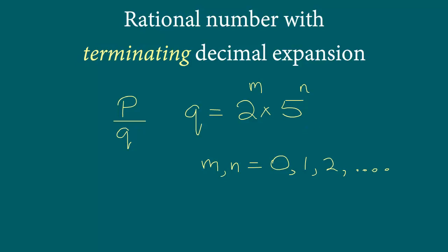So let's find out. Let's take a look at some examples and see if we are able to visualize this. So let's say our denominator is like this: 2 to the power m times 5 to the power n.